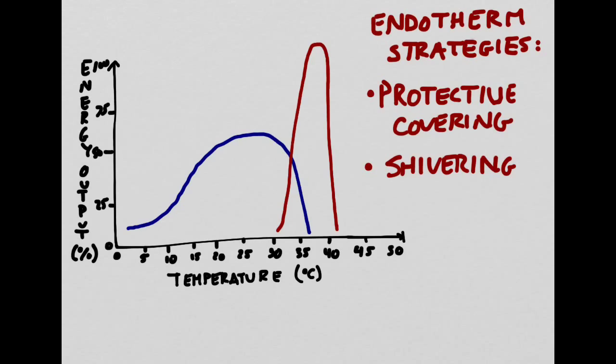However, in severe hypothermia, the victim will actually cease shivering. This is because, eventually, your body will deplete all of its stores of glucose, your cells can no longer respirate, and you can no longer generate the ATP necessary to shiver.